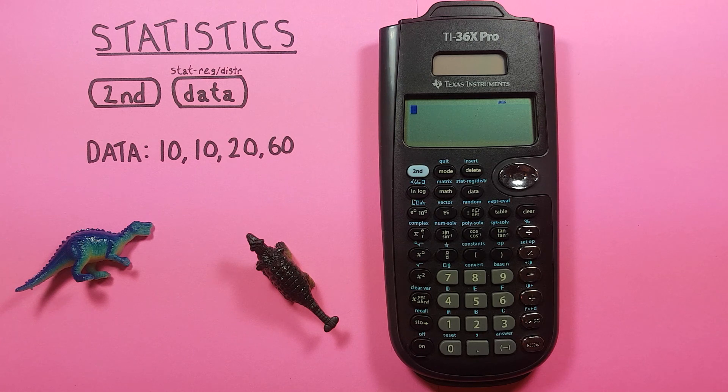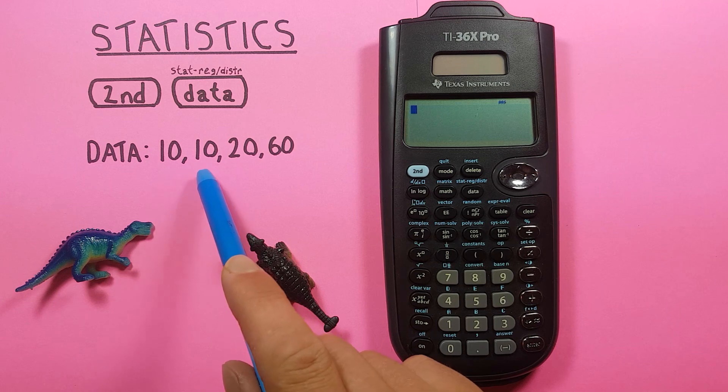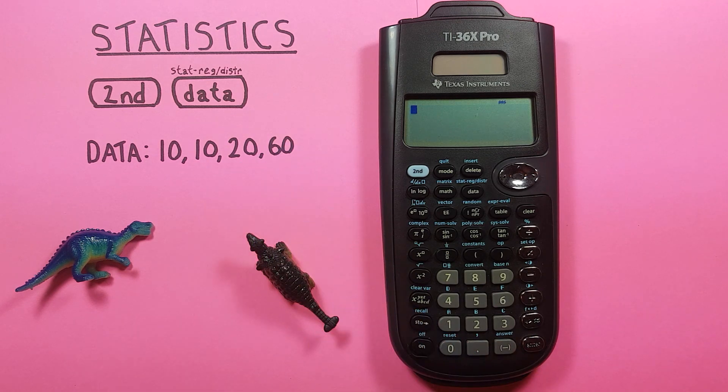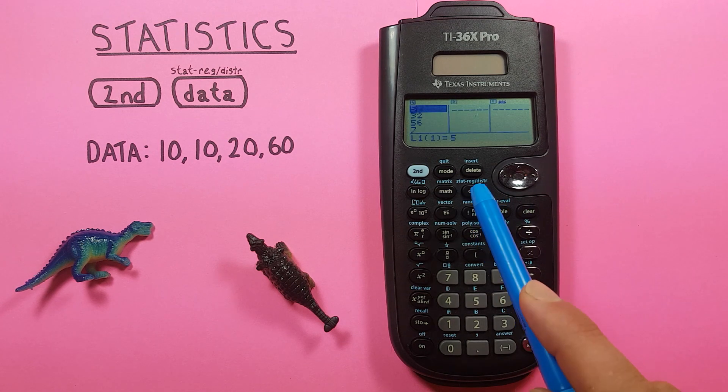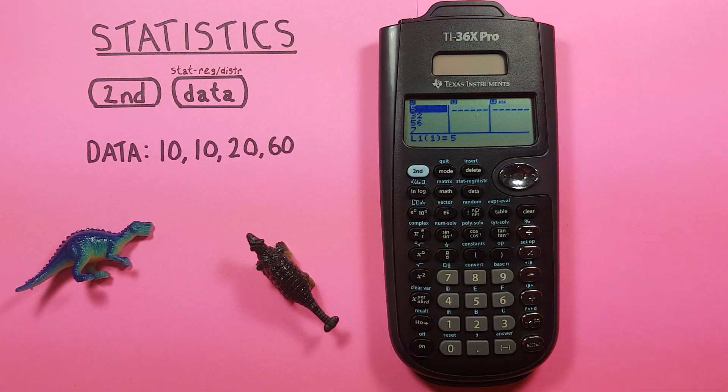Now the first step we have to take is to enter our data set. For this example we'll be using this data set here: 10, 10, 20, and 60. That can be measurements, counts, whatever we want it to be. To do that we first press data, and it brings up these three lists here.